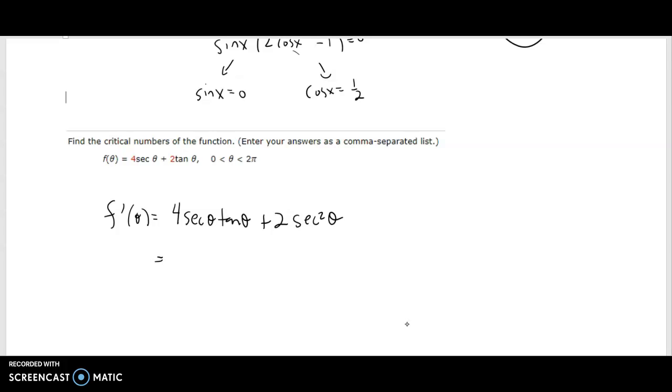Similar to the previous one, I'm going to factor out the secant, and that leaves me with 4 tangent theta. We might as well factor out the 2. So I'm going to factor out 2 secant theta, and then I've got 2 tangent theta plus secant theta.